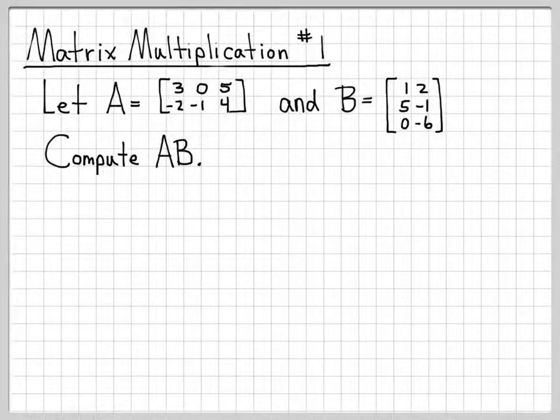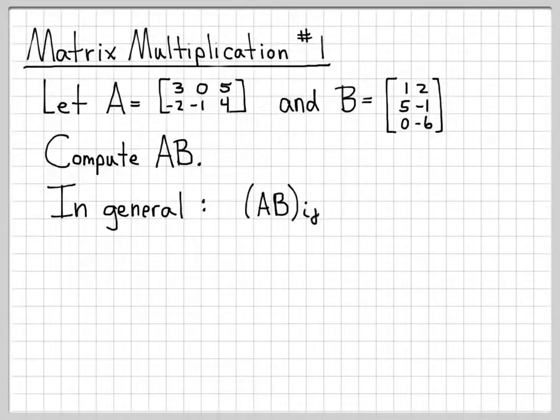And we're going to compute the product AB, so matrix A times matrix B. In general, the way that you do this type of computation is with what's called the row column product or the column row product rule.